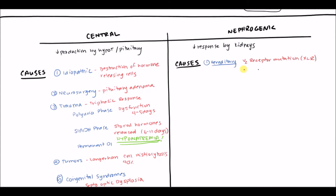Another hereditary mutation can be in the aquaporin-2 gene. ADH can be produced and react to its receptor perfectly, but the aquaporin-2 channel just doesn't work. This can be an autosomal recessive or autosomal dominant trait.